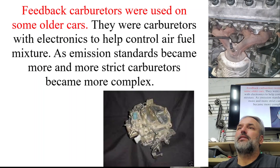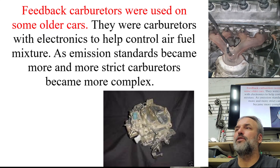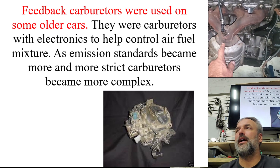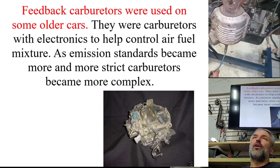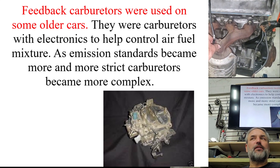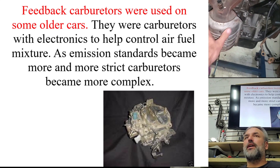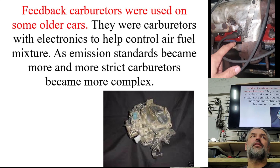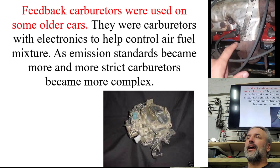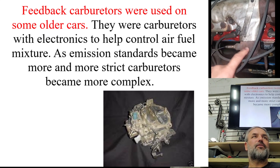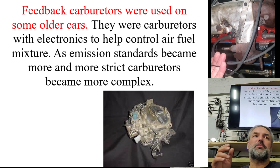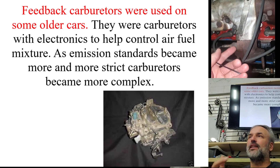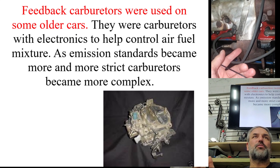Feedback carburetors were used on some older cars — carburetors with electronics to help control the air-fuel mixture. As emission standards became more and more strict, carburetors became more and more complex. They put O2 sensors on cars and had carburetors with basically a fuel injector built in that would try to maintain the proper air-fuel mixture. As these carburetors became more complex, they became more difficult to work on, and eventually all manufacturers just went fuel injection.